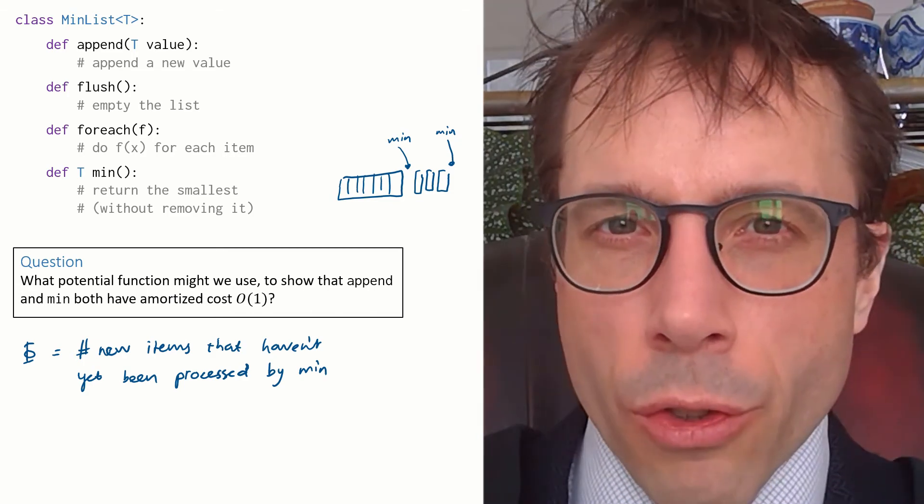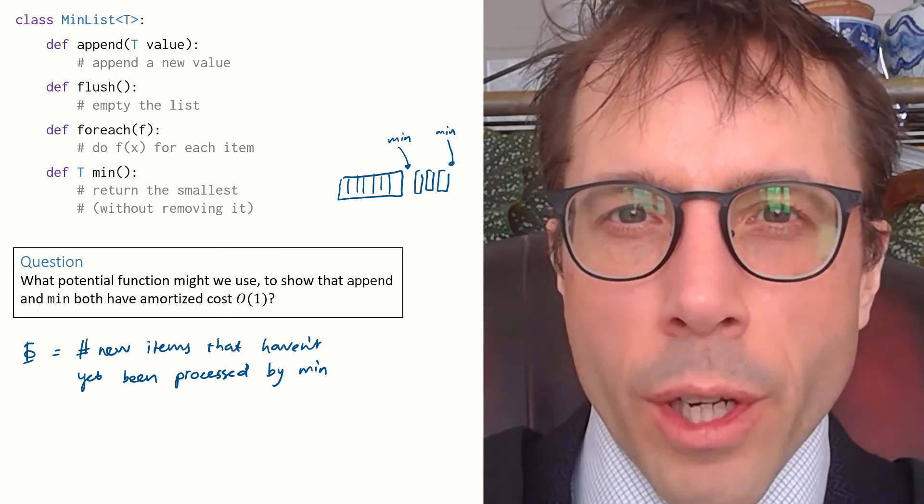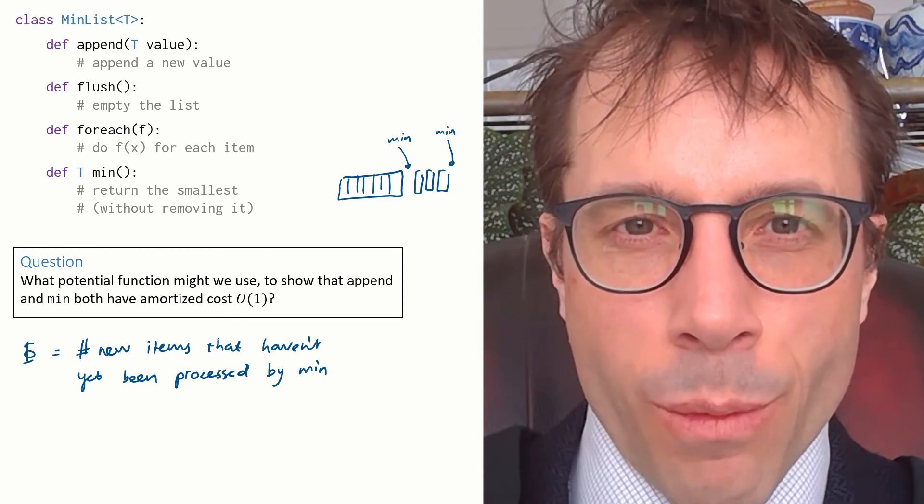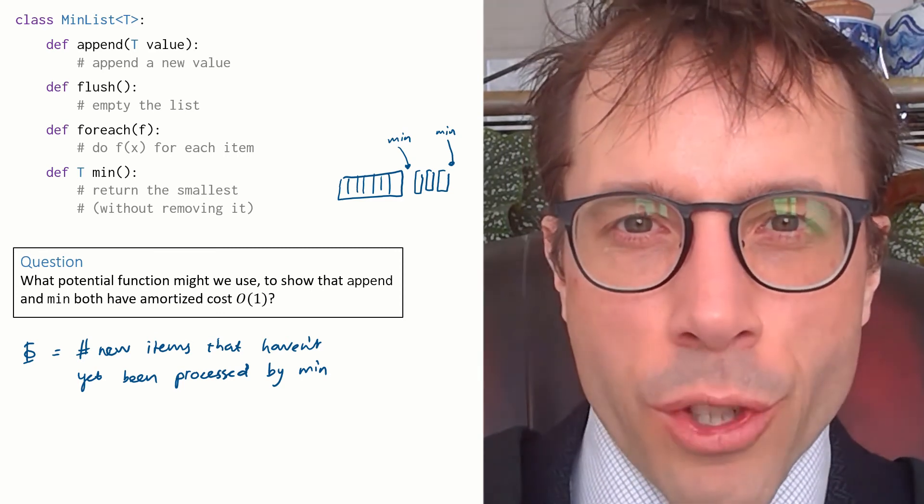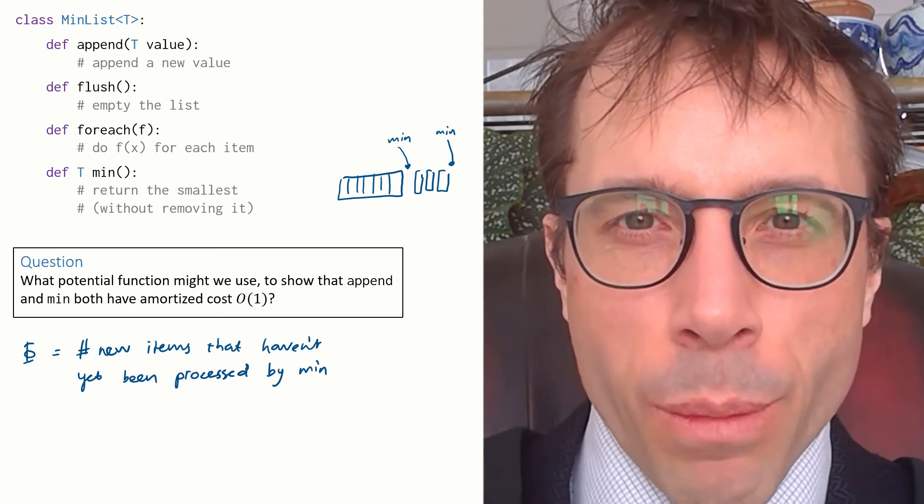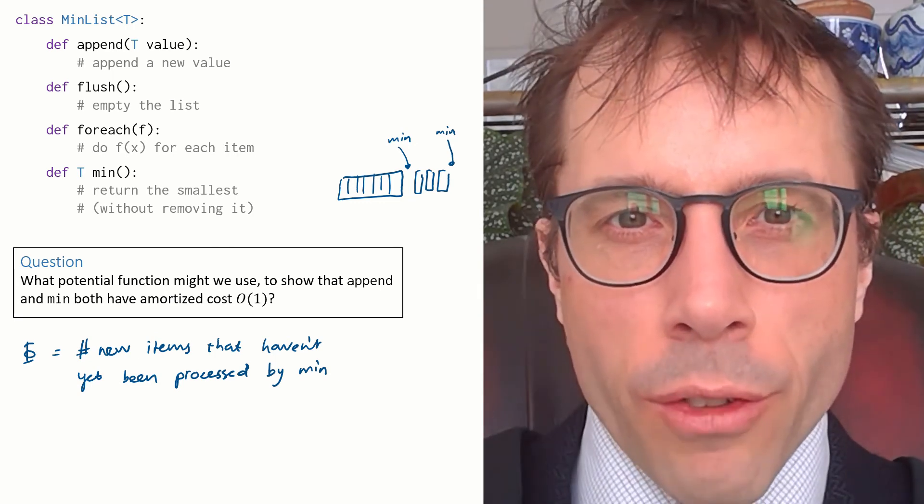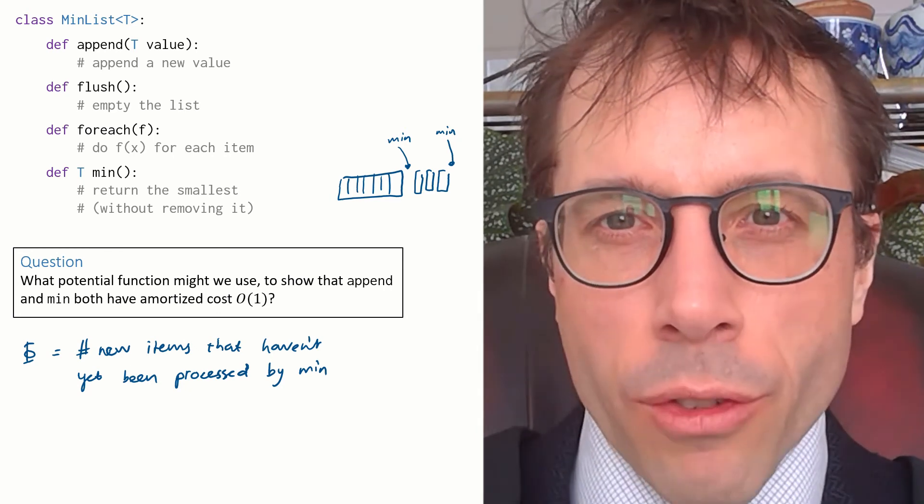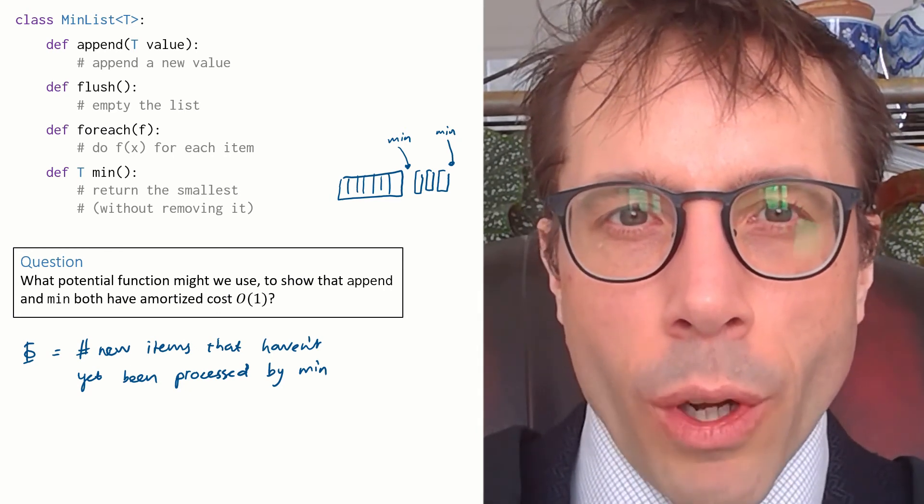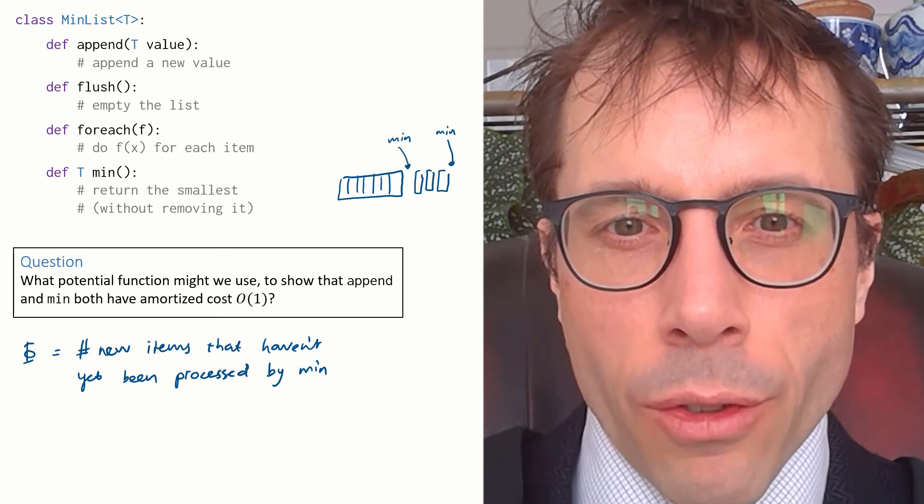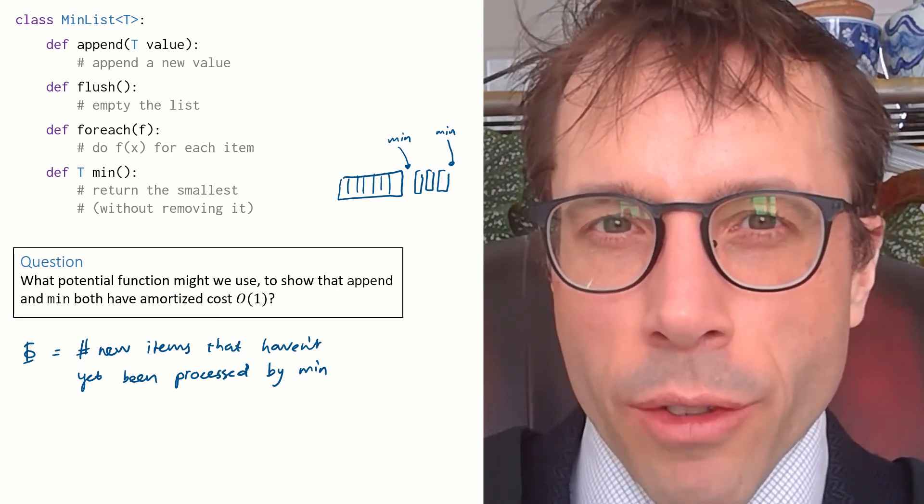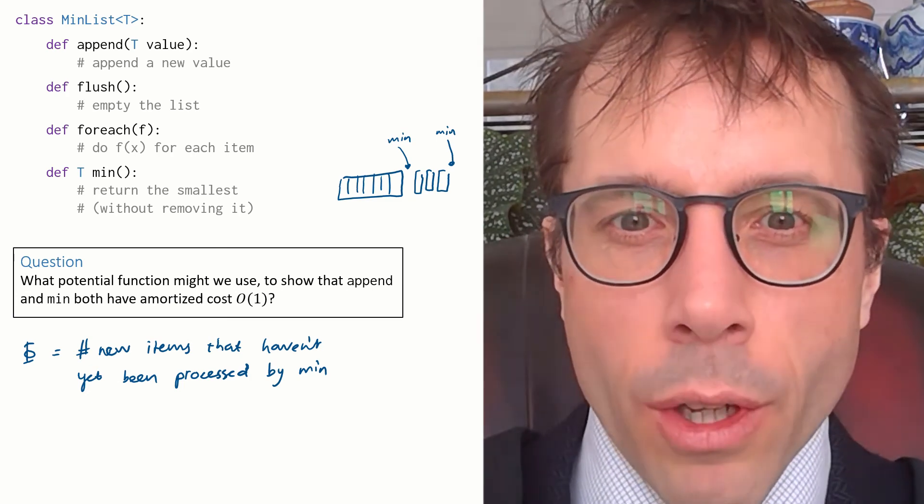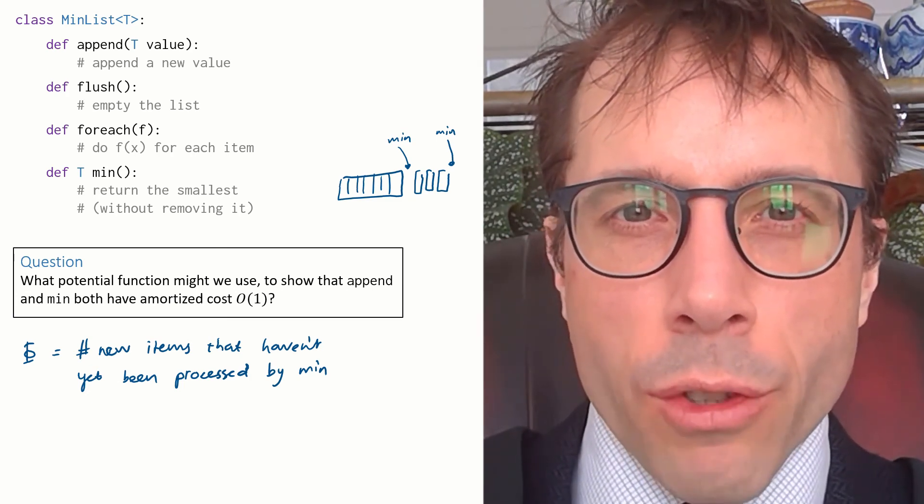Just a quick aside. Don't think of what we're trying to do here is trying to derive the correct potential function. There's no such thing. It's up to us. We're free to choose whatever potential function we want and different potential functions will lead to different amortized costs. At the end of the day, all that matters is whether the amortized costs we've found are useful. In other words, do they give tight bounds on aggregate costs? If the amortized costs that you've found don't lead to tight bounds on aggregate costs, maybe that's a hint that you need to go back and redesign your potential function.